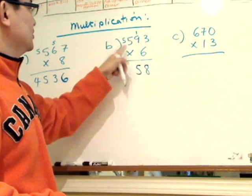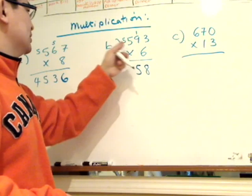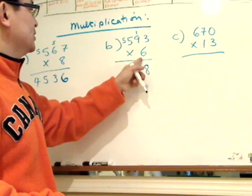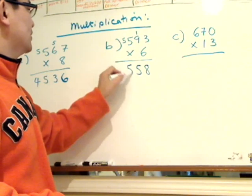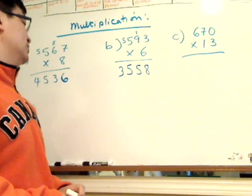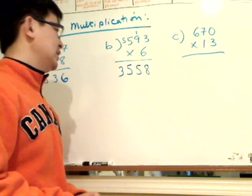carry the five to the next digit. Okay, five times six is 30 plus five is 35. 3558, three thousand five hundred and fifty-eight.